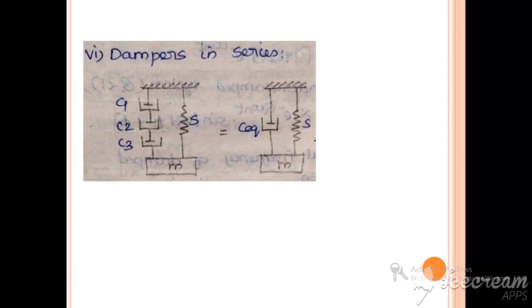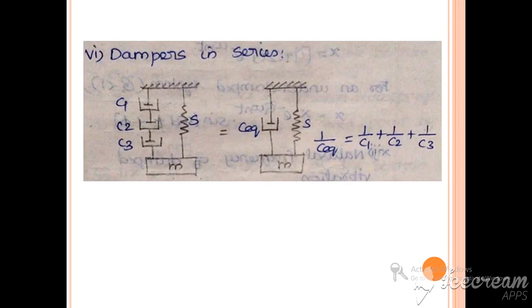When dampers are connected to a spring-mass system or any vibratory system, the equivalent damping coefficient C_equivalent can be calculated using the formula: 1/C_equivalent = 1/C1 + 1/C2.